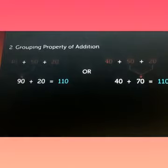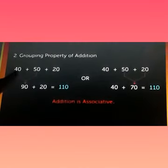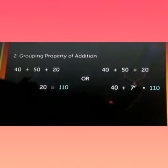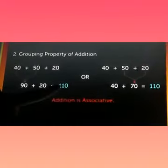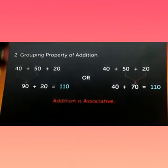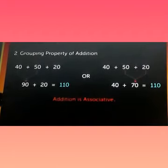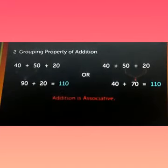So this grouping property means that even if we change the group—for example, here we added 40 and 50, and here we added 50 and 20—we get the same sum. Grouping property is used when we have to add two, three, or more numbers. Even if we change the group of numbers, we get the same sum.